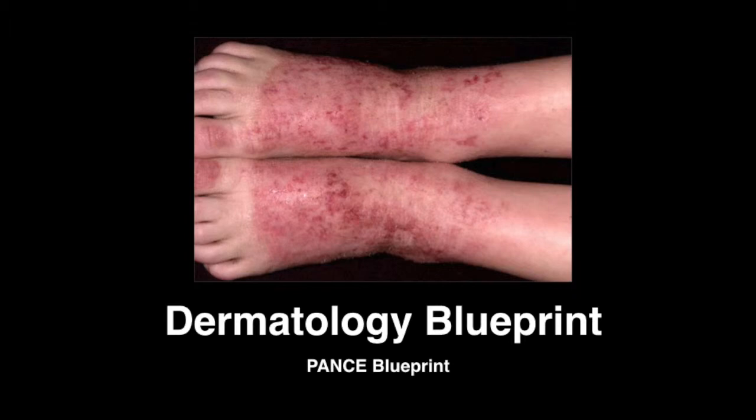The first group of skin disorders we need to look at that's on the dermatology blueprint is called the eczematous eruptions. There are three types of eczematous eruptions you need to be concerned with when it comes to the dermatology blueprint.